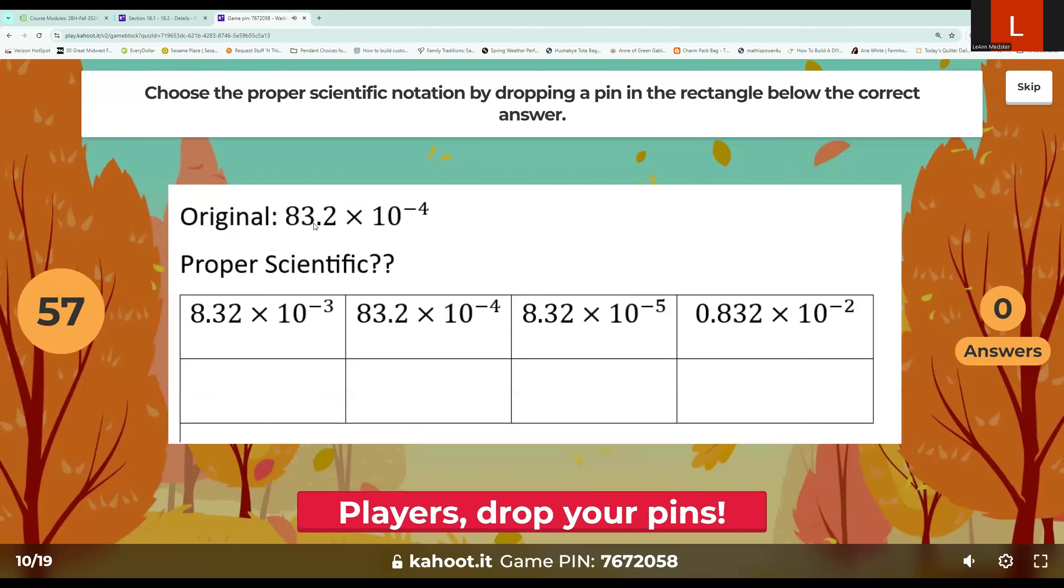So we've got 83.2 times 10 to the negative 4. So I need to move my decimal one place to the left to make it 8.32. And when you move to the left, remember, LARS tells us we add the number of moves we made to our exponent. So we're going to be adding 1 to a negative 4. So this is going to be 8.32. And be careful. When you add a positive and a negative, remember on your calculator, you should check this. It's actually subtracting the value between them and then keeping the sign of the larger. So it ends up being 8.32 times 10 to the negative 3.